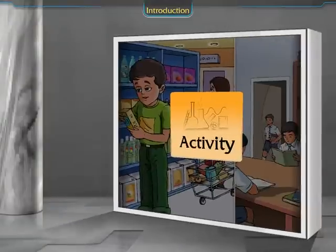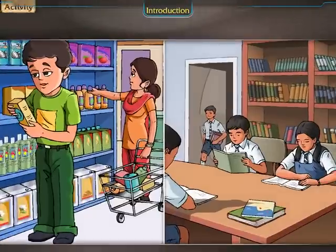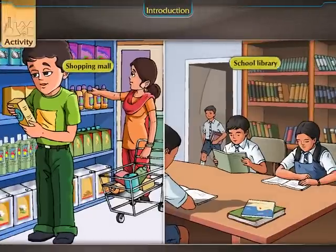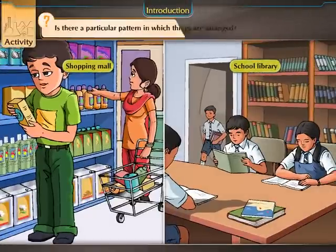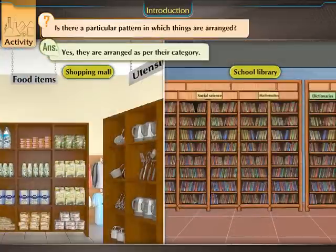Activity. Let us have a look at how things are arranged at various places, such as in a shopping mall or in your school library. Is there a particular pattern in which things are arranged? Yes, they are arranged as per their category.